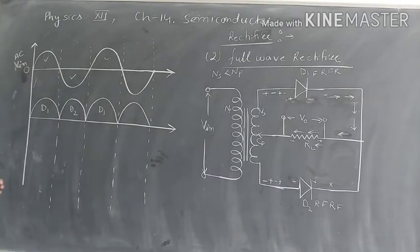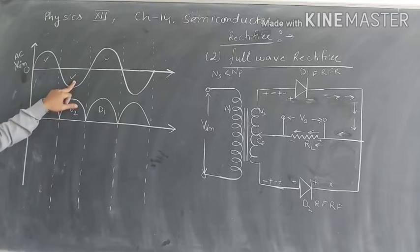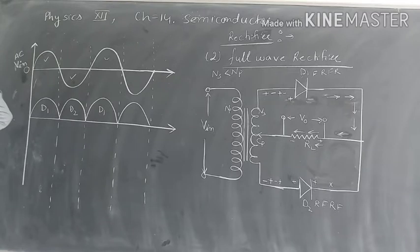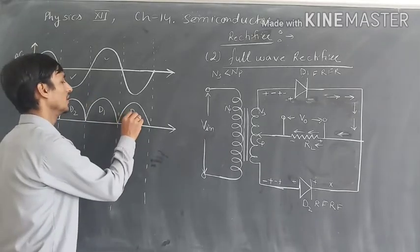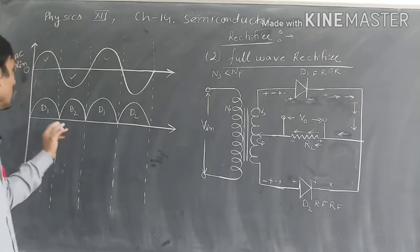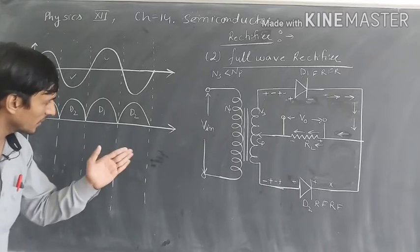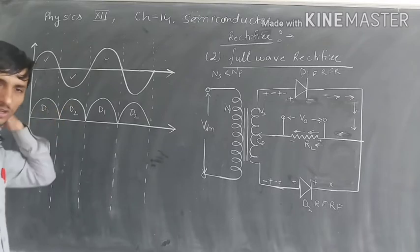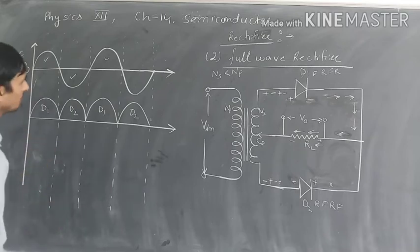Toh yahan aap dekh paoge: first half cycle mein D1 is in forward bias and D2 is in reverse bias, toh D1 ke kaaran current output aa raha hai. Second half cycle mein D1 is in reverse bias, D2 is in forward bias, toh D2 ke kaaran current flow ho raha hai. Phir third half cycle D1, fourth half cycle D2 — aur har baar current same direction mein flow hoti hai. Value change ho rahi hai AC ke according, magnitude change ho raha hai, lekin direction same ho gayi — this is called pulsating DC.